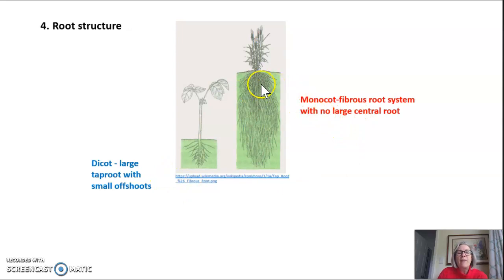Monocots on the other hand have these fibrous root systems that often don't go as deep. This picture can be a little bit misleading but you don't see any one central root system and you can pull them up quite easily when you're pulling monocot weeds in the garden.